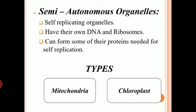So this is about semi-autonomous organelles. In a eukaryotic cell, where cell organelles are present, how many types of semi-autonomous organelles are there? Two — one is mitochondria and another is chloroplast. These two organelles have their own DNA as well as their own ribosomes. So let's see mitochondria and chloroplast in a little detail.